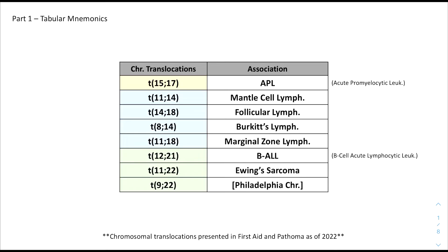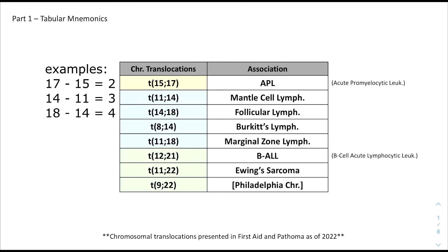Not only are these translocations in the table unique, but it turns out that the difference between the two numbers in each translocation is also unique. So if you subtract the bigger number by the smaller number in each pairing, you'll get a number that is unique to the pathology written on the right. And this is what we're going to use to make the table from scratch.